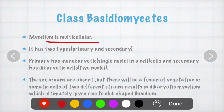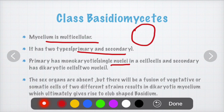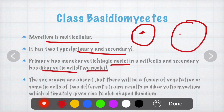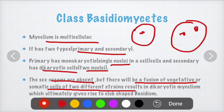In Basidiomycetes, mycelium is multicellular. There are two types: primary mycelium, called monokaryotic because the cell consists of only a single nucleus, and secondary mycelium, called dikaryotic because it consists of two nuclei. Sex organs are absent, so there is no sexual reproduction. Instead, vegetative or somatic cells of two different strains fuse together to form a dikaryotic secondary mycelium, developing into a new species.